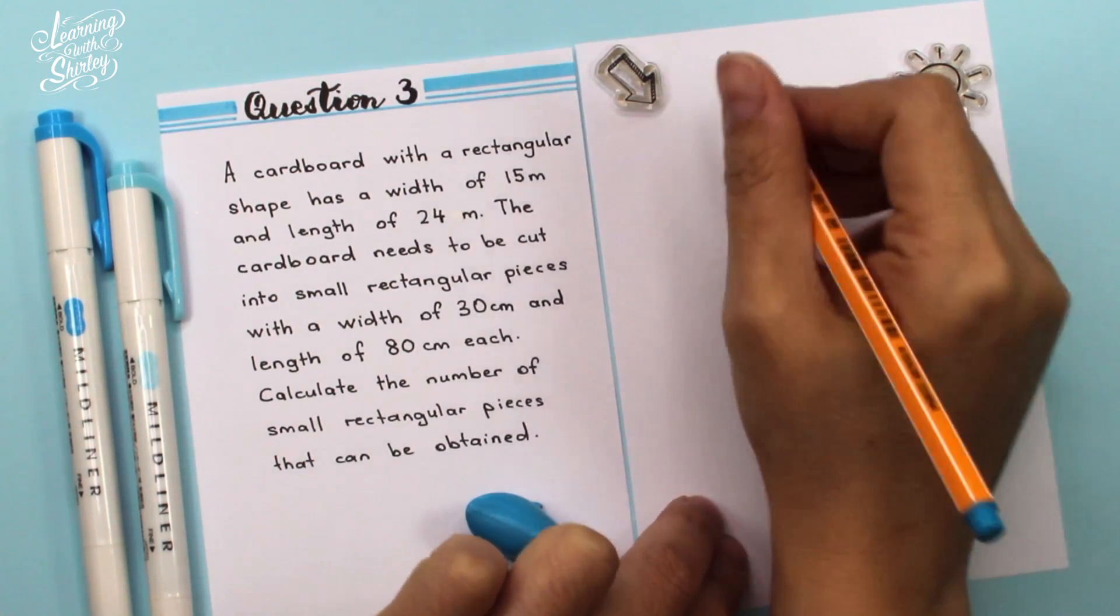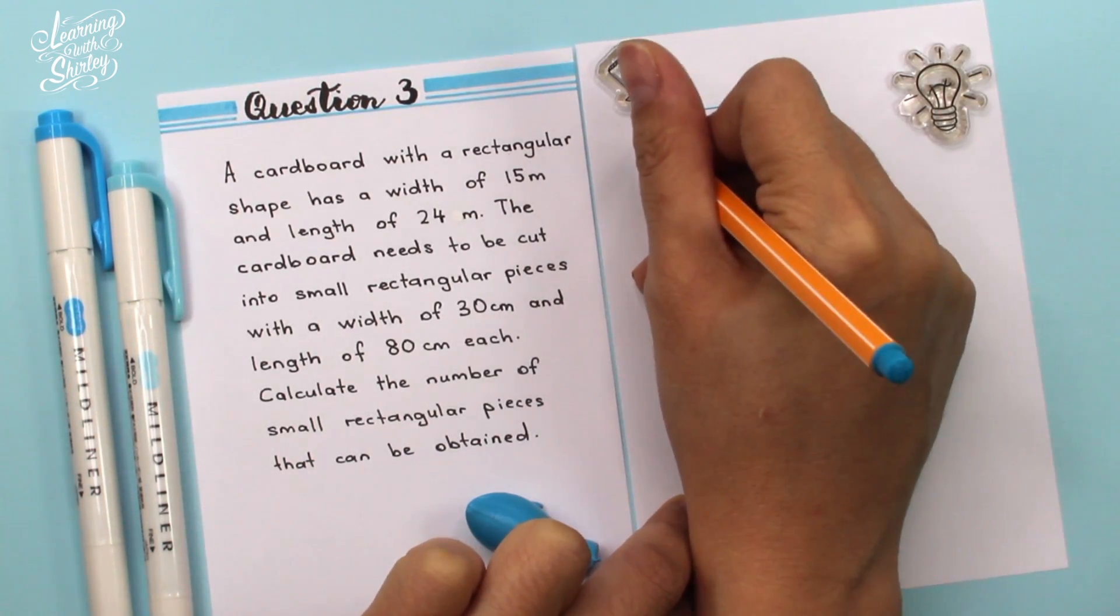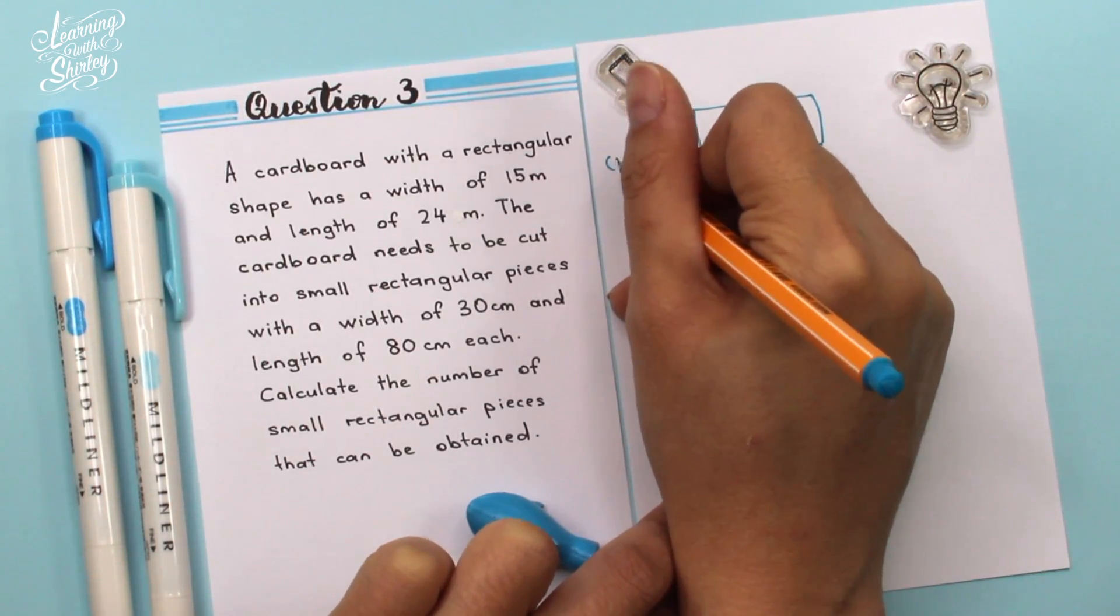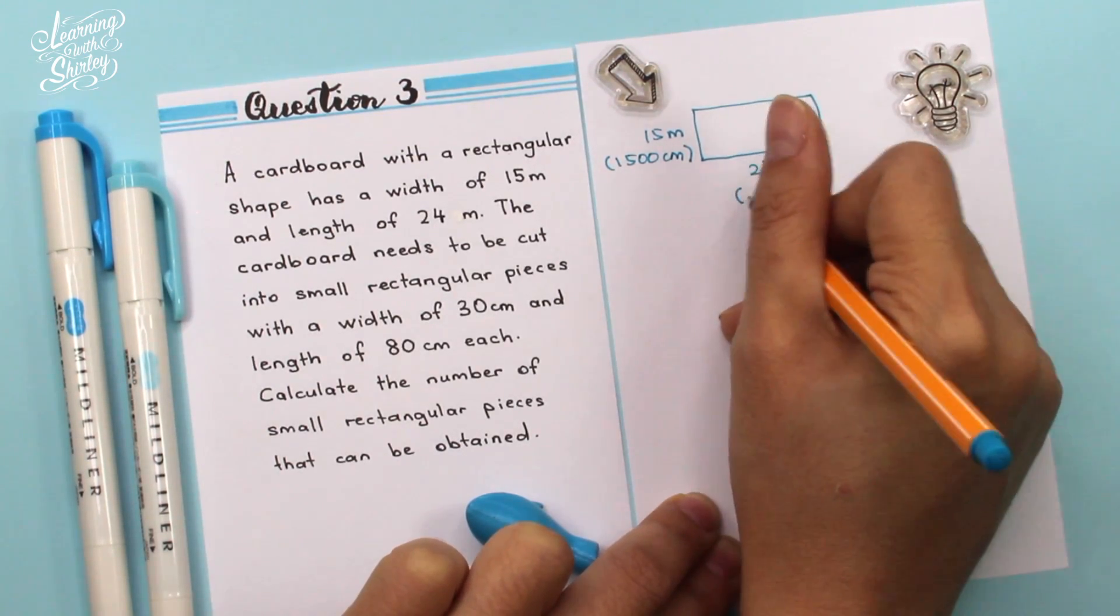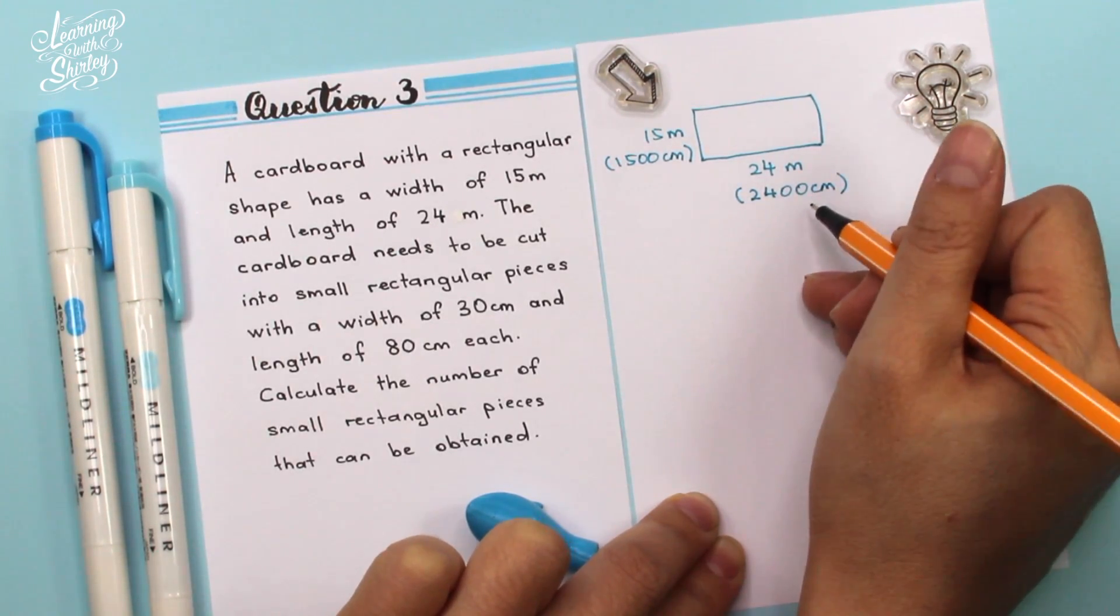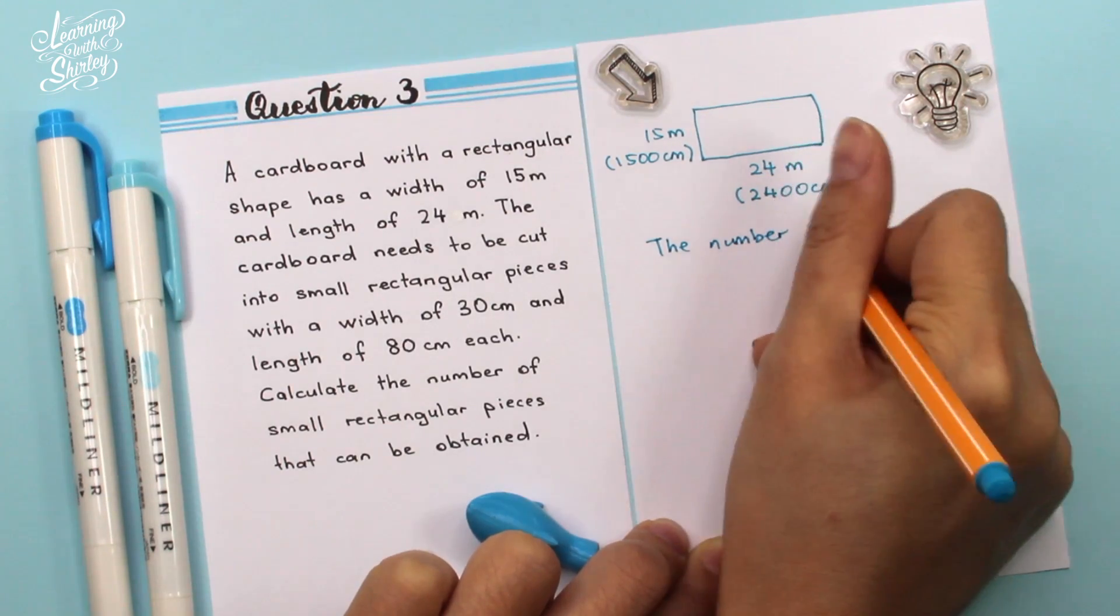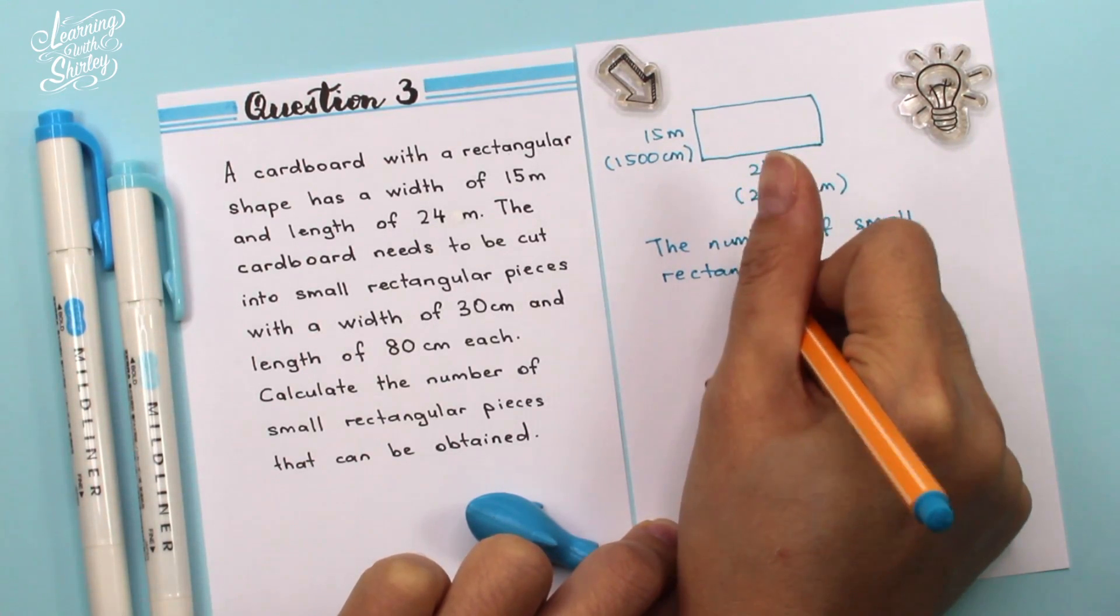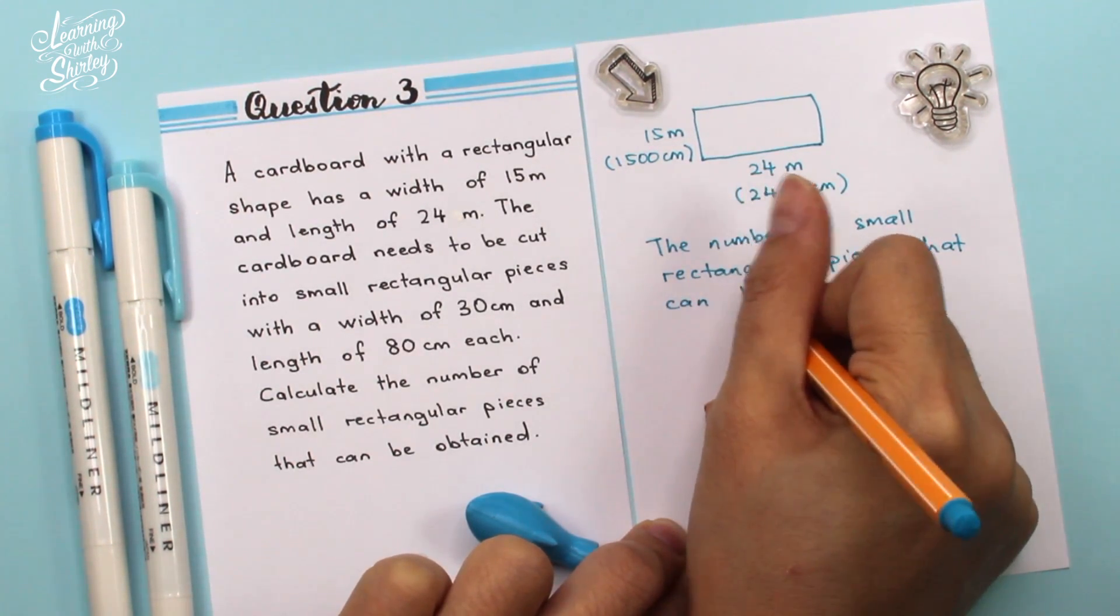To solve this question, first of all, I'm going to sketch a big rectangle over here. And then the dimensions are 15 meters and here will be 24 meters. So if I change to cm, here will be 1500 cm because I need to multiply by 100 to get cm. And then for this will be 2400 cm. I use 24 times 100, I get 2400 cm.